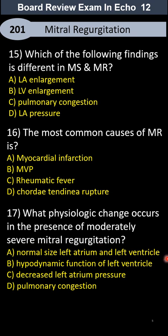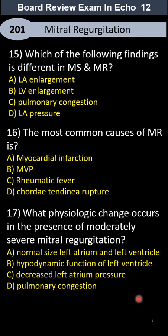Question 17: What physiological changes occur in the presence of moderate to severe or moderately severe mitral regurgitation? Is it normal size of the left atrium and left ventricle, hemodynamic function of the left ventricle, decreased left atrium pressure, or pulmonary congestion?